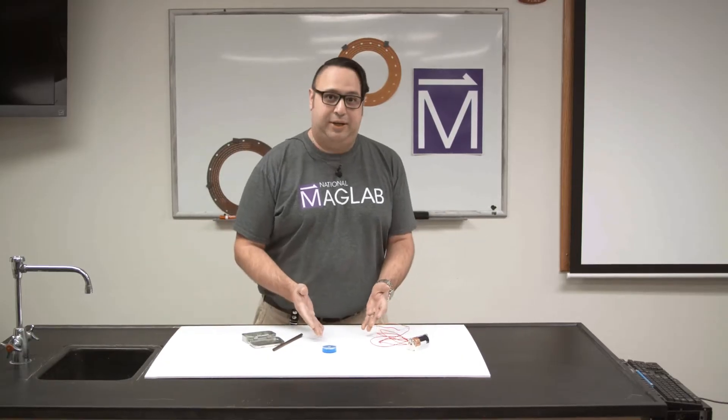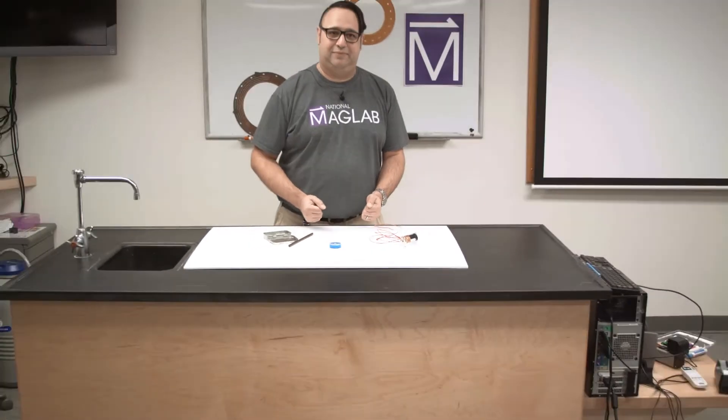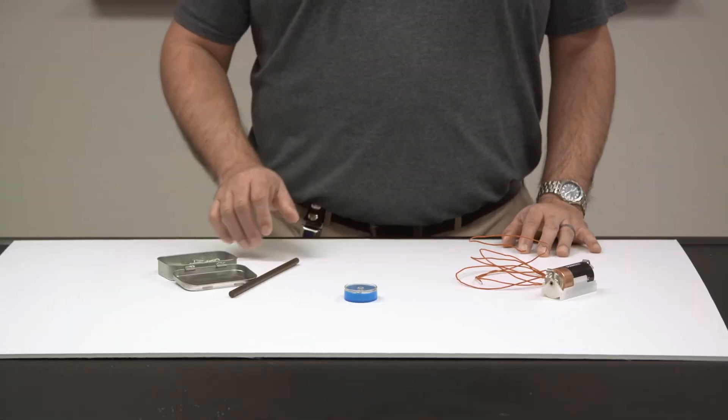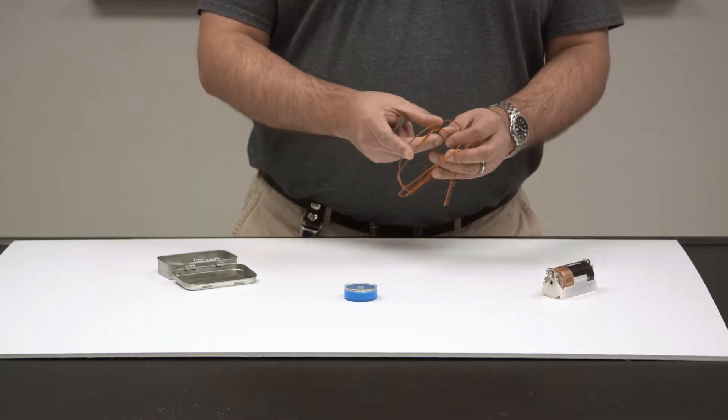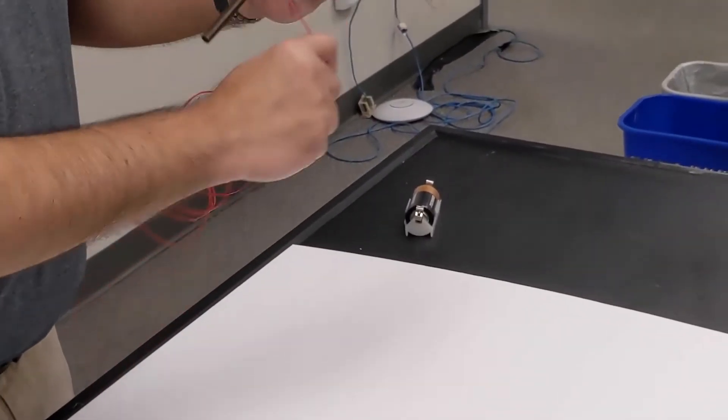So what I've got here are the materials you need to make an electromagnet at home. What we know about electricity is that as electricity travels through a material, it creates a magnetic field around it.